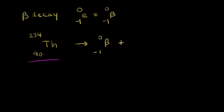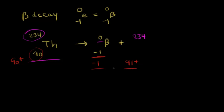What else is produced? The number of nucleons is conserved — I have 234 nucleons on the left, so I need 234 on the right. The beta particle contributes zero nucleons, so I need 234. Charge is also conserved: I have 90 positive charges on the left. On the right, the beta particle contributes a negative one charge, so I need 91 positive charges. An atomic number of 91 is protactinium, so we make protactinium-234.